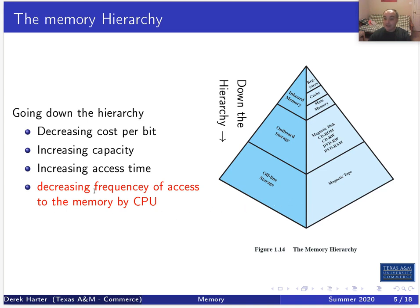Keep in mind that as you go down the hierarchy, there's a decreasing frequency of access to memory by the CPU. Things in registers are there because we need them right now. Things closer to the top are accessed more frequently, while things like offline storage — which can actually be tape — we might not access for weeks, days, or even years.